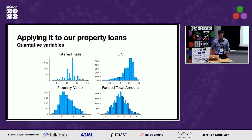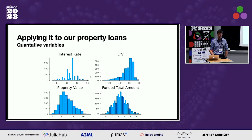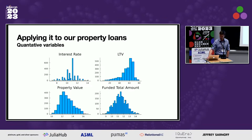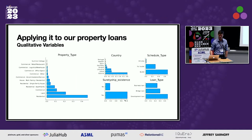Looking at the data, the interest rate averages around 10%, ranging from 8% to 14%. We expect higher interest rate loans to default more often. Loan-to-value is distributed around 60%, and property value and funded amount are nicely distributed on a log scale. For qualitative variables, the property type is mostly residential with some summer cottages, and the countries are mainly European.